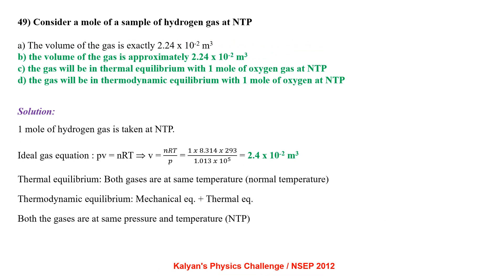Consider one mole of hydrogen gas at NTP. Applying ideal gas equation PV = nRT, V = nRT/P = 2.24×10⁻² m³ approximately. Thermal equilibrium means both gases are at the same temperature. Thermodynamic equilibrium means both mechanical and thermal equilibrium — same pressure and temperature. So options B, C and D are correct.